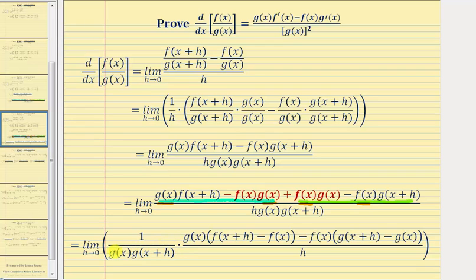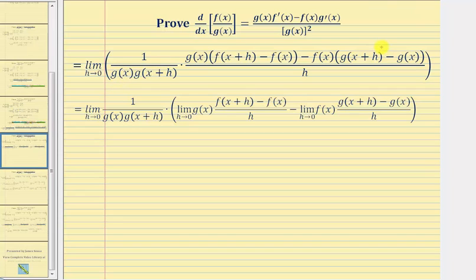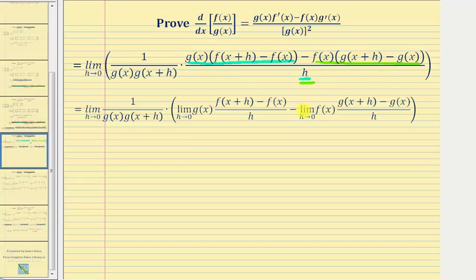Because we have a product, we can write this limit of a product as a product of two limits, and we'll also break up the fraction into a difference of two fractions, writing the limit of a difference as a difference of two limits. The first fraction uses g(x) times [f(x+h) minus f(x)] over h, and the second uses f(x) times [g(x+h) minus g(x)] over h, so we have that first limit minus this second limit.